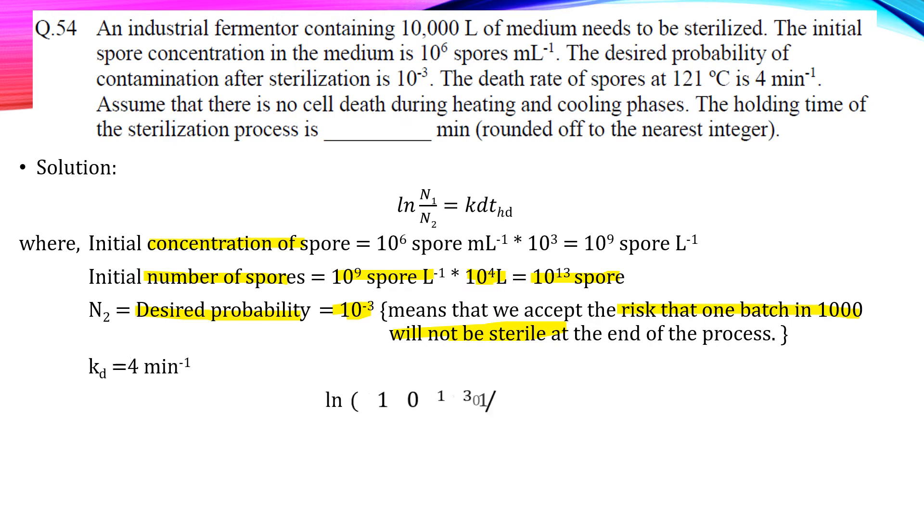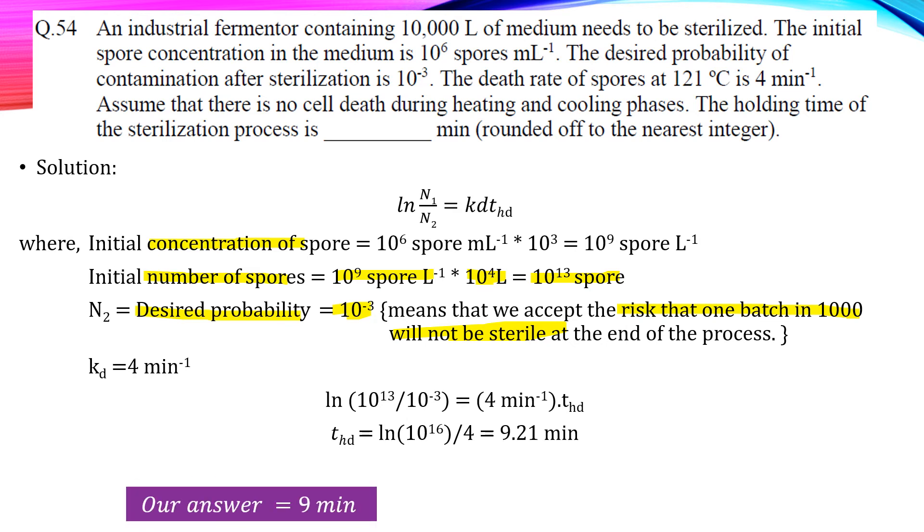Now putting all these into our formula we will get 9.21 as the answer. And rounding off to the nearest integer will give us 9.